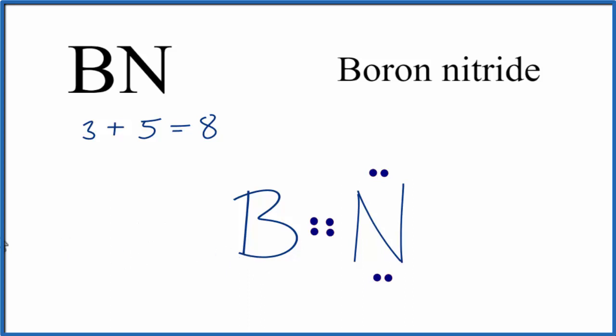So if we take another pair of electrons and move it to the center to create a triple bond, we then have 8 valence electrons for the nitrogen, and the boron, it has 6 valence electrons.